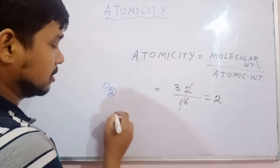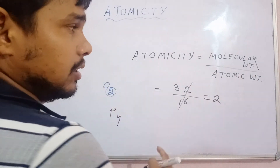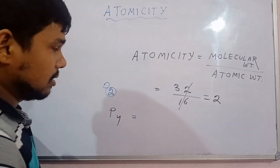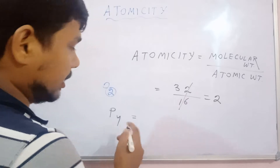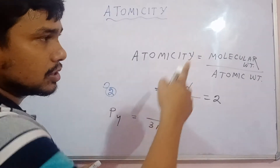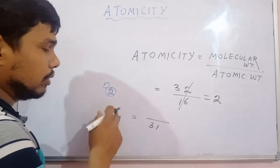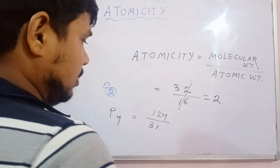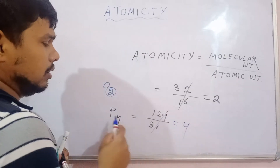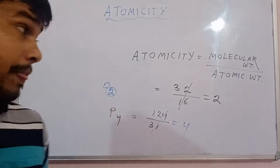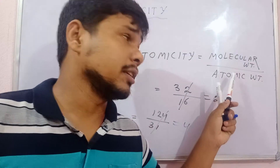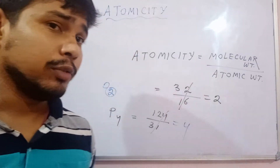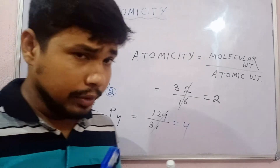For another example — phosphorus P4 has atomicity 4. The atomic weight of phosphorus is 31, so the molecular weight of P4 is 31 × 4 = 124. So 124 divided by 31 gives atomicity 4. So if molecular weight and atomic weight are given, we can calculate the atomicity.